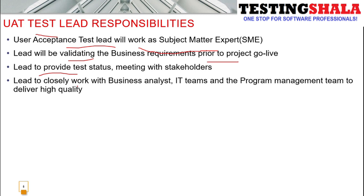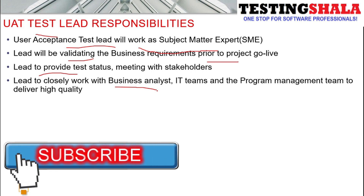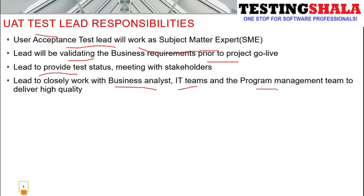As a UAT test lead, you will also be working with various key team members and stakeholders for the given project or application testing — including the business analyst, the IT team, program management, scrum master, product owner, and product management. You will be working very closely with a good number of stakeholders to ensure you are delivering high quality work, either from your team or by doing the UAT testing yourself.